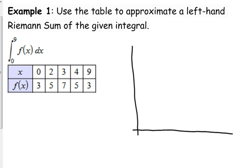So, we've got x is 0, y is 3, x is 2, y is 5, x is 3, y is 7, x is 4, y is 5, and x is 9, y is back to 3. Now, I'm not going to connect these dots because I don't know what the function looks like, I just know these exact values, these select values right here. It wants a left-hand Riemann sum. So, I'm going to go in here and I'm going to draw my rectangles like I would if I had the entire function.